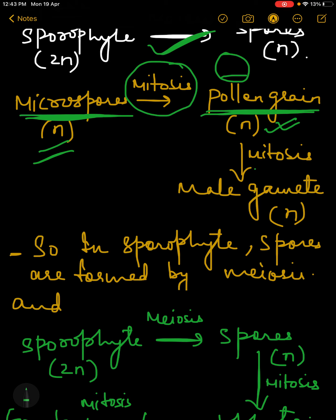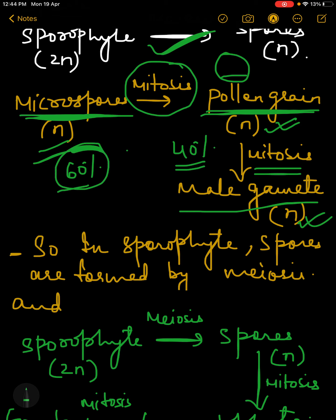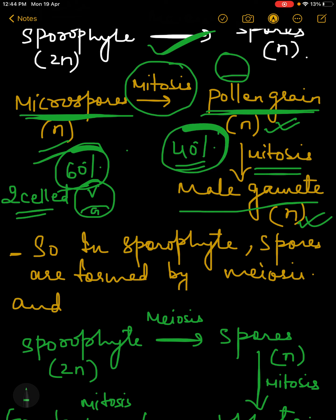This pollen grain will again undergo mitosis, as in the case of 40 percent of plants, and will give rise to male gametes which are again haploid. In 60 percent of cases the pollen grain is shed at the 2-cell stage — one is the vegetative cell (the bigger one) and the other is the generative cell (the smaller one). In the other 40 percent of cases, the generative cell undergoes one more mitotic division to give rise to 2 male gametes, with the vegetative cell also still present.